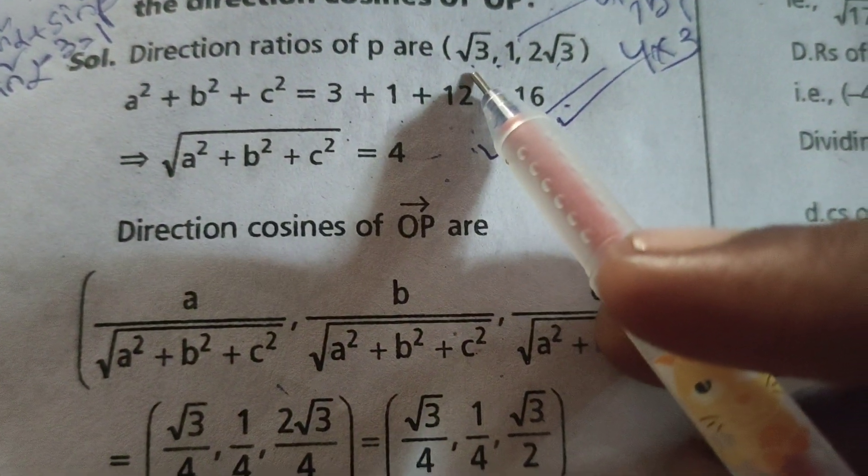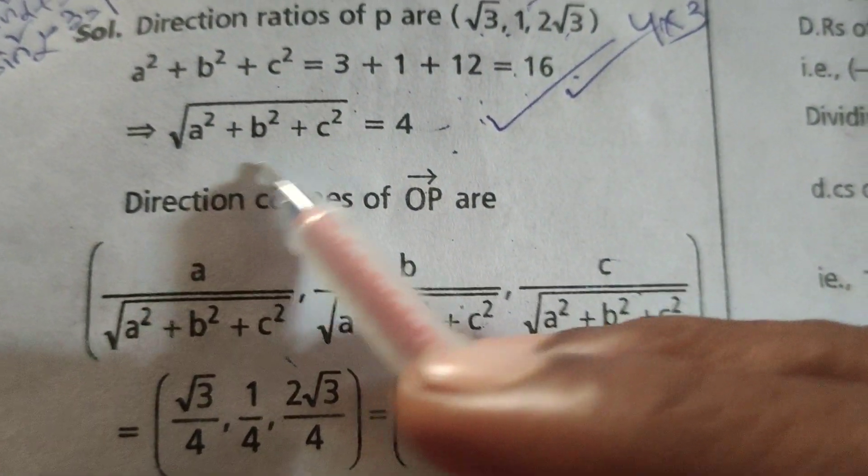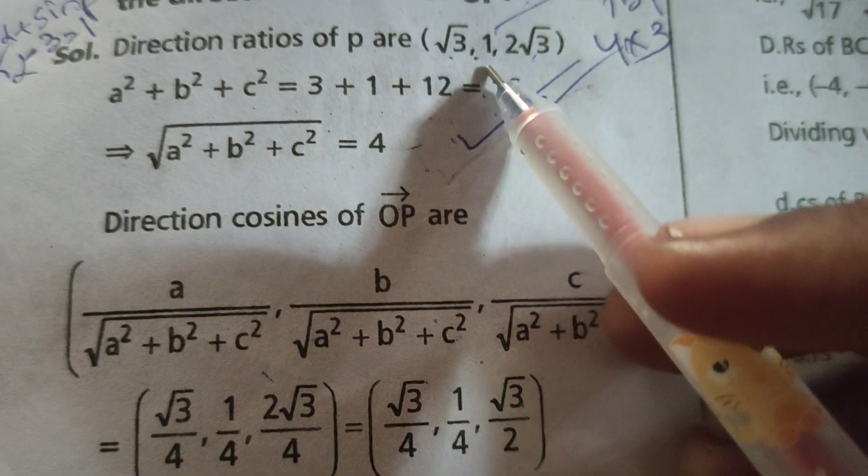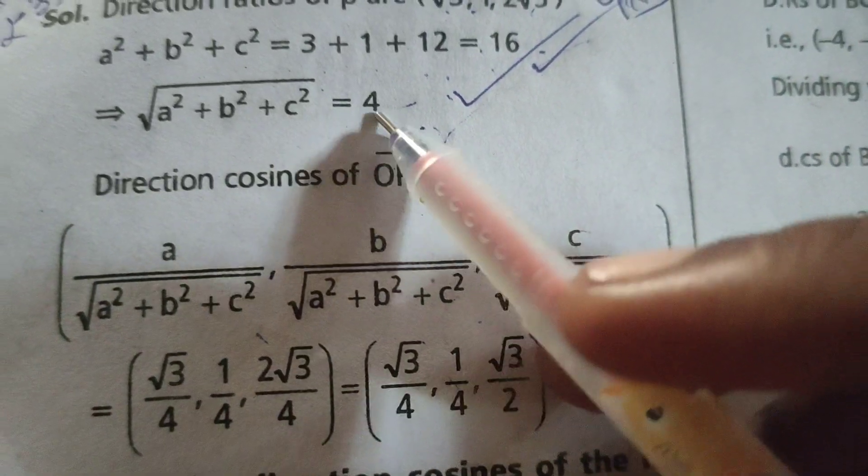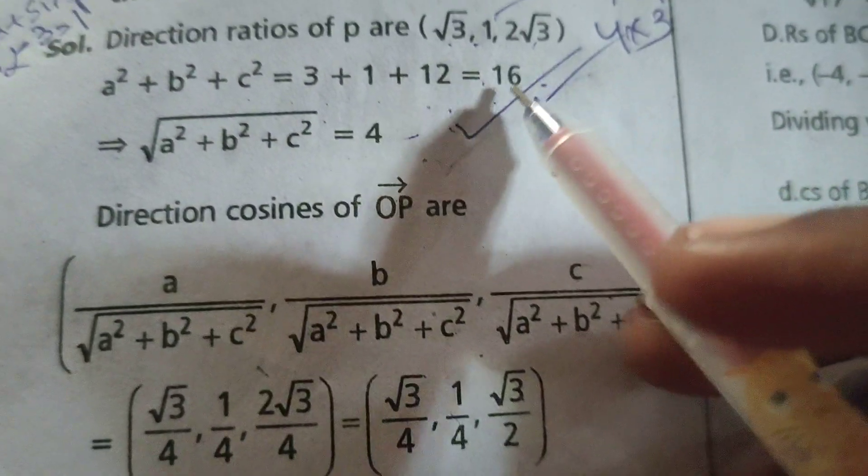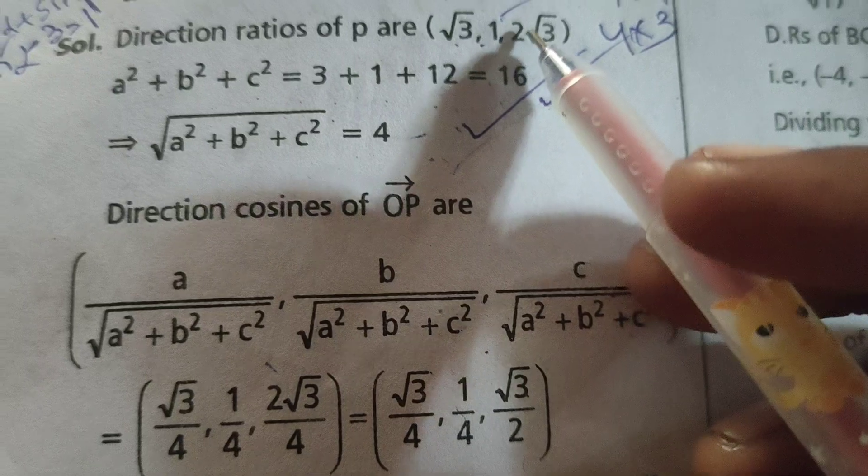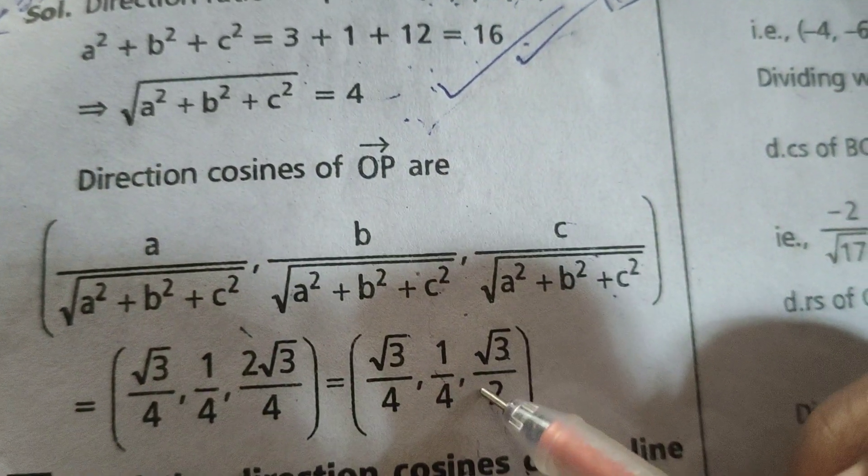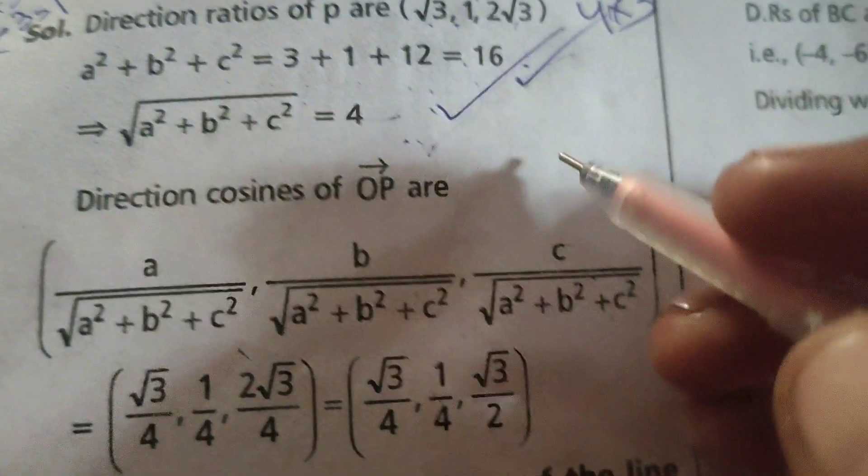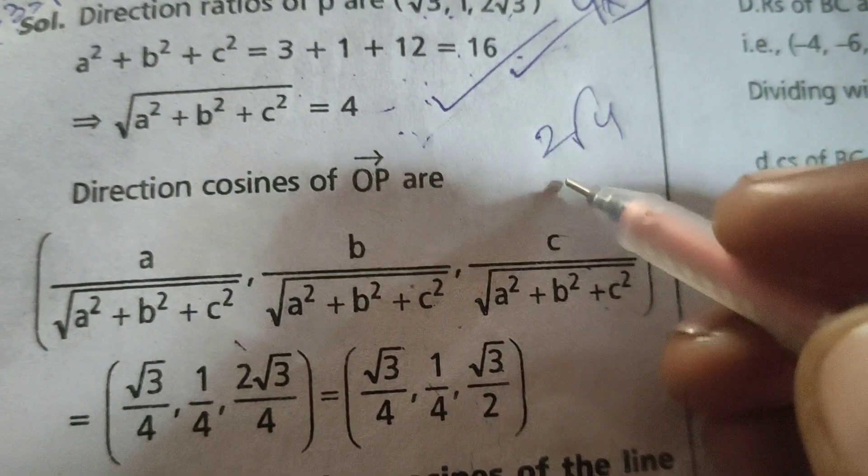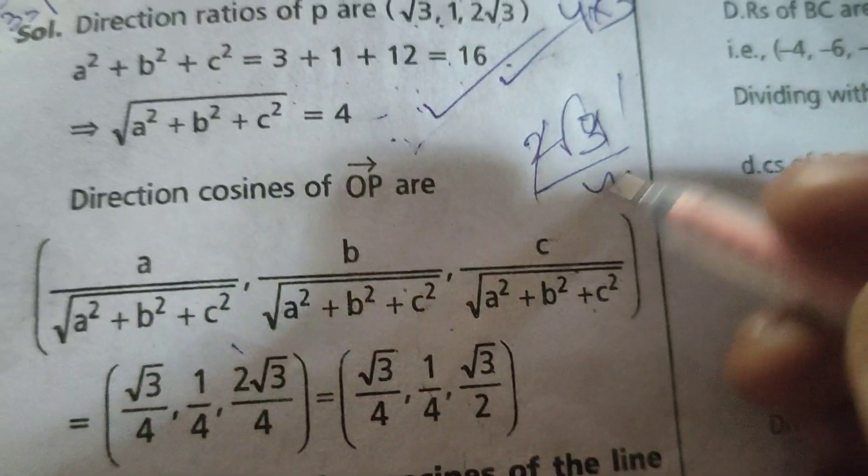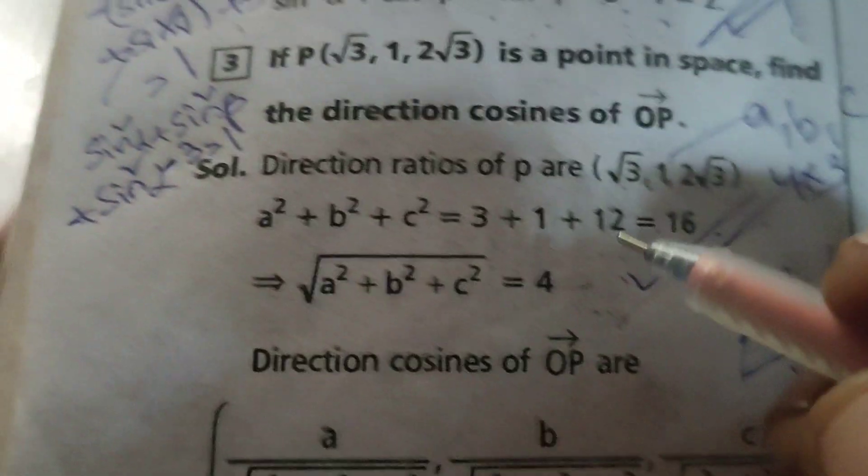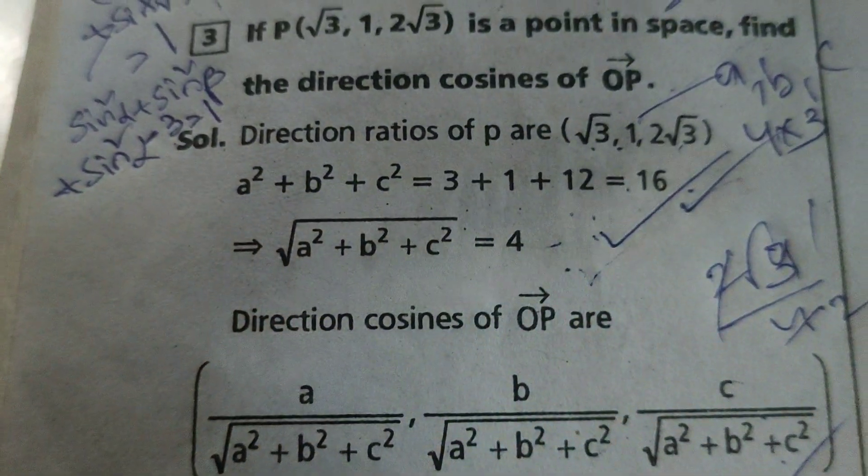Therefore A means √3 by 4, B means 1 by 4, and C means 2√3 by 4. Simplifying: √3/4, 1/4, √3/2. These are the direction cosines for the given problem. Thank you.